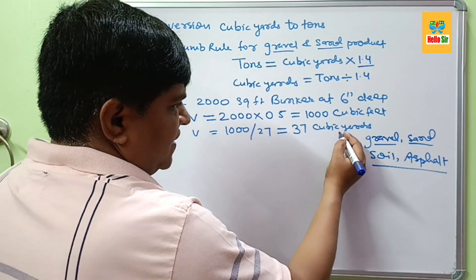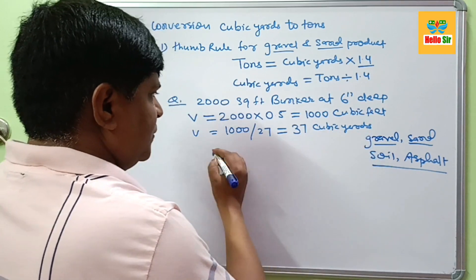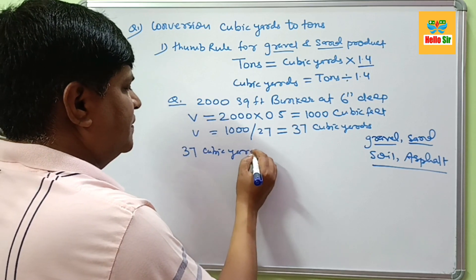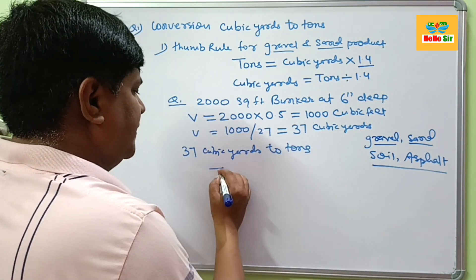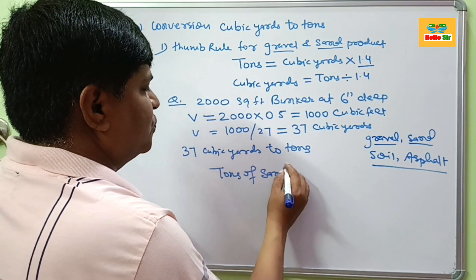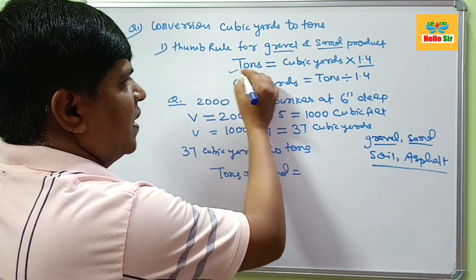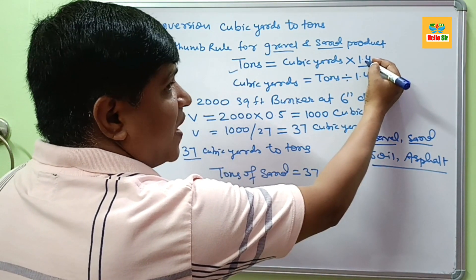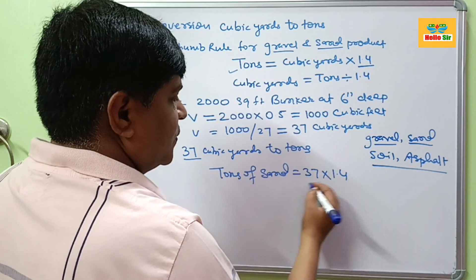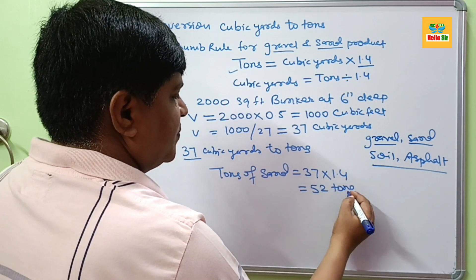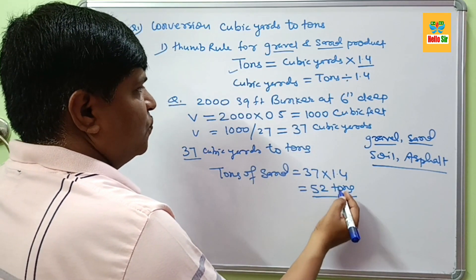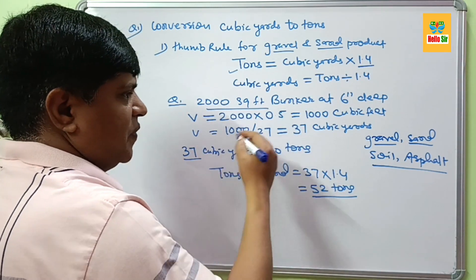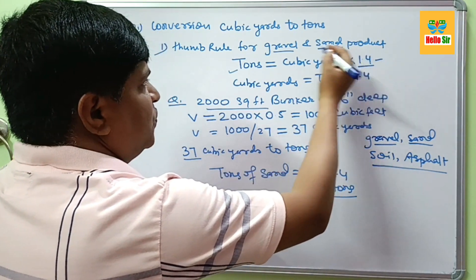And your question is asked in tons. Then how do we change cubic yards to tons. Now 37 cubic yards to tons, it means tons of sand. You should use this first formula. Cubic yards, how much cubic yards? Your 37, multiply with the thumb rule factor 1.4. This will be about 52 tons. It means you will need about 52 tons of sand for this bunker.